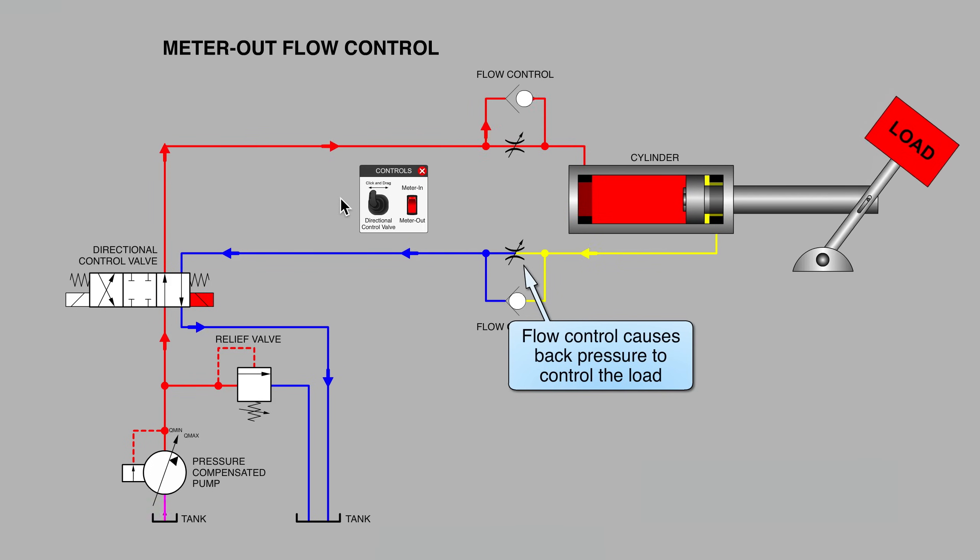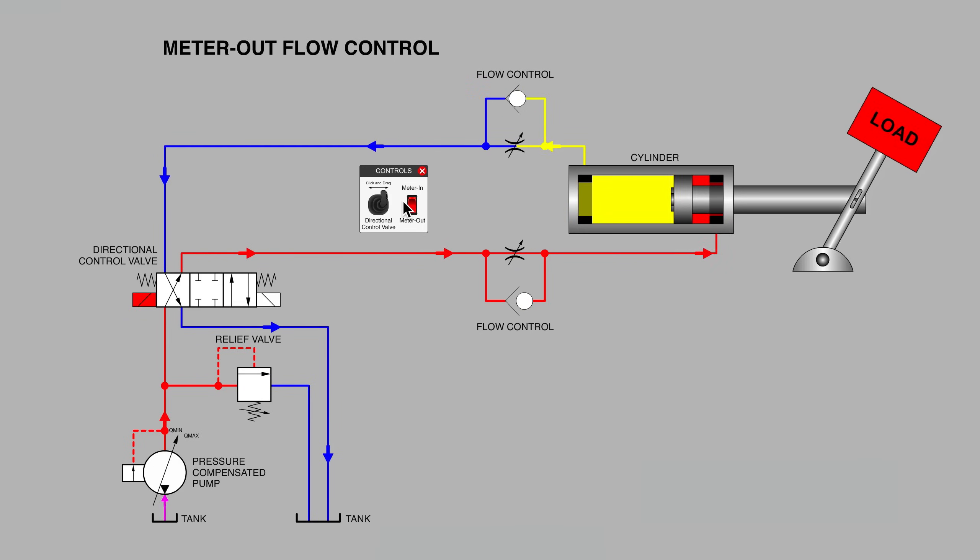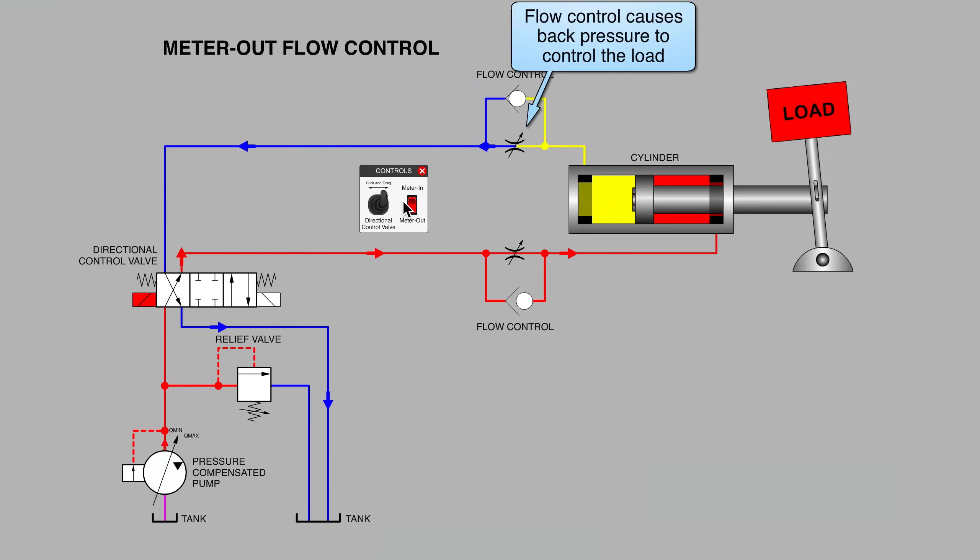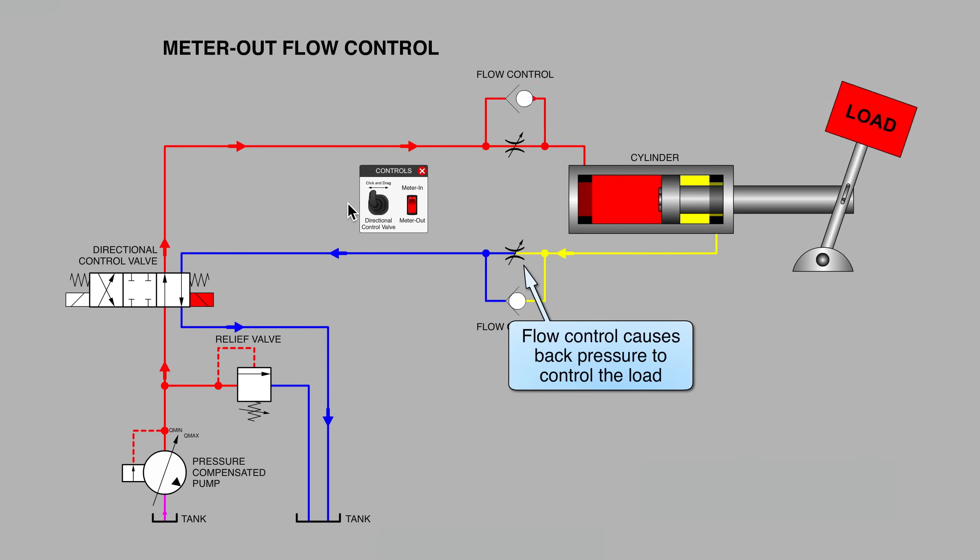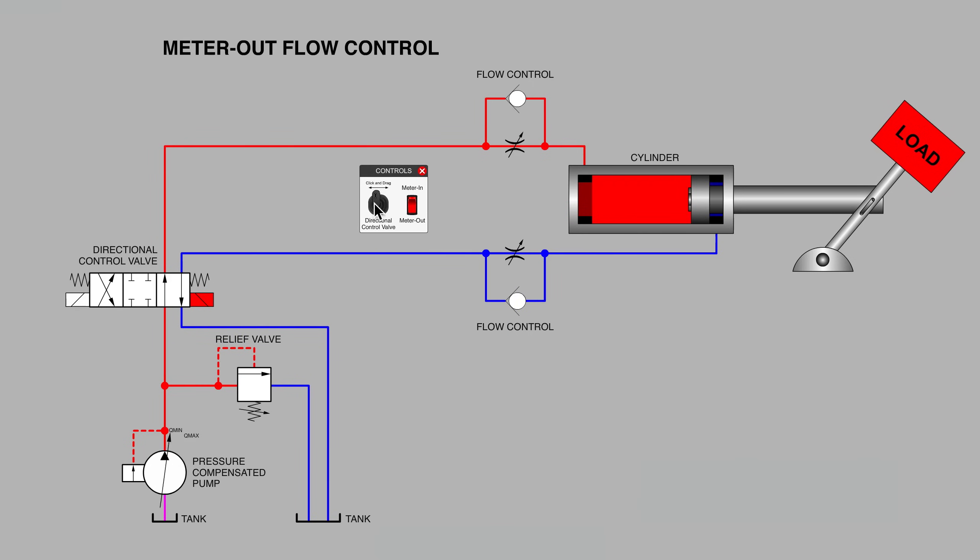Now that there's a runaway type of load, perhaps our needle valve if restricted sufficiently could control what otherwise might be a very uneven motion. So that's the difference between meter in and meter out.